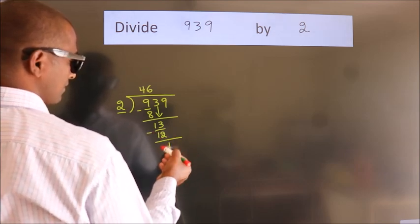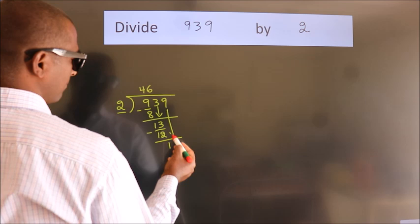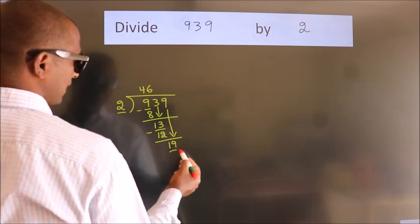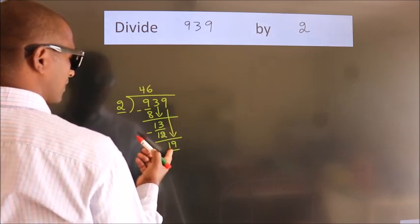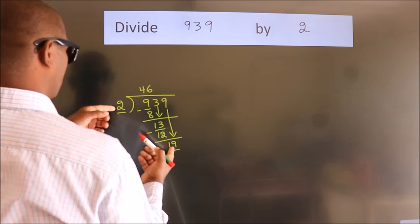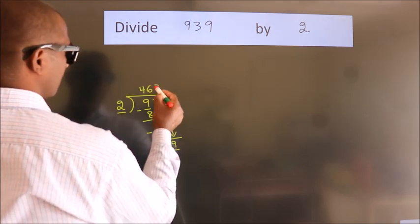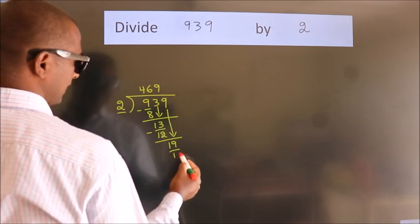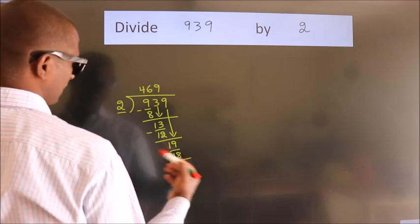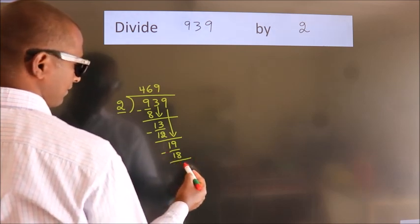After this, bring down the beside number. So 9 down, making 19. A number close to 19 in the 2 table is 2 nines are 18. Now we subtract and get 1.